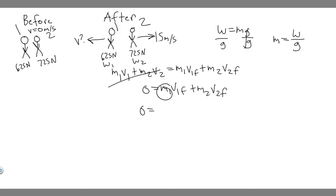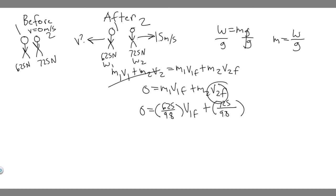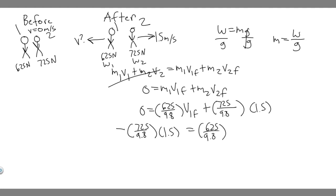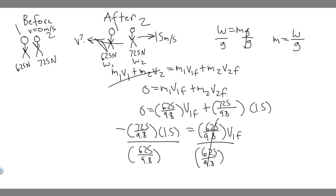Plugging in: 0 = (625/9.8)·V1_final + (725/9.8)·1.5. Person 1 is the lighter skater at 625 newtons and person 2 is the heavier at 725 newtons. Moving the second term to the other side: −(725/9.8)·1.5 = (625/9.8)·V1_final. Then divide both sides by (625/9.8). The result will be negative because the lighter skater travels in the opposite direction.